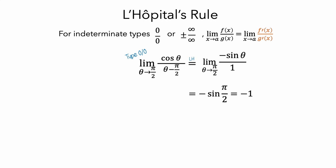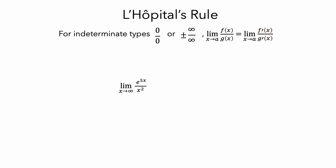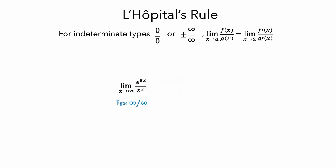Let's look at another example. Here is the limit as x goes to infinity of e to the 5x divided by x squared. If we look at the numerator, this gets larger and larger without bound as x goes to infinity. Similarly, the denominator also gets larger without bound as x goes to infinity. So this limit is indeterminate of type infinity over infinity. Also, both the numerator and denominator are differentiable. One way this is different from the previous example is that we have x going to infinity rather than a number.